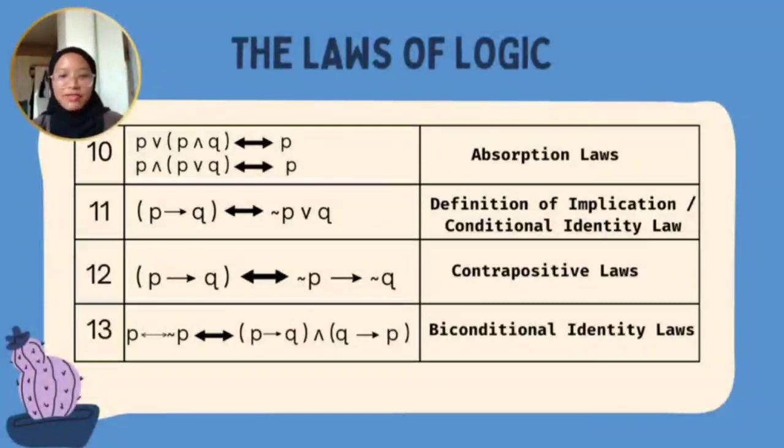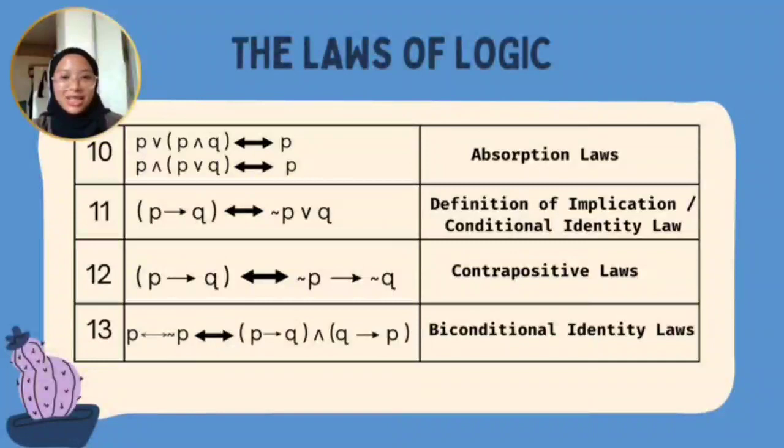Next we have the Contrapositive Law. From the original statement, we contrapositive it. For example, if P implies Q, then it becomes not Q implies not P.